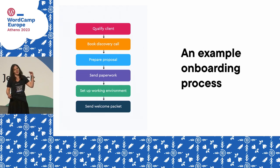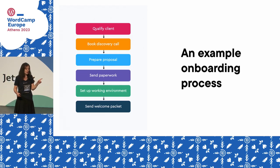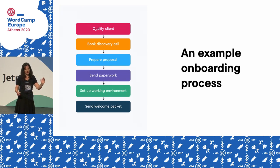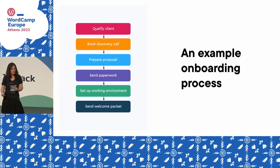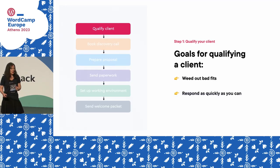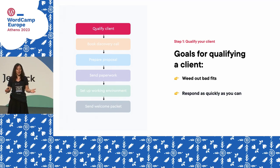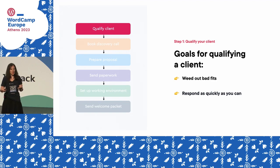Now we're going to get into the example: my six-step onboarding process. You might already be doing a lot of this, but these are the six steps I would follow every time from when a lead first contacts me to when the project begins. Step one: qualify the client, which basically means weeding out any bad fits as quickly as possible.